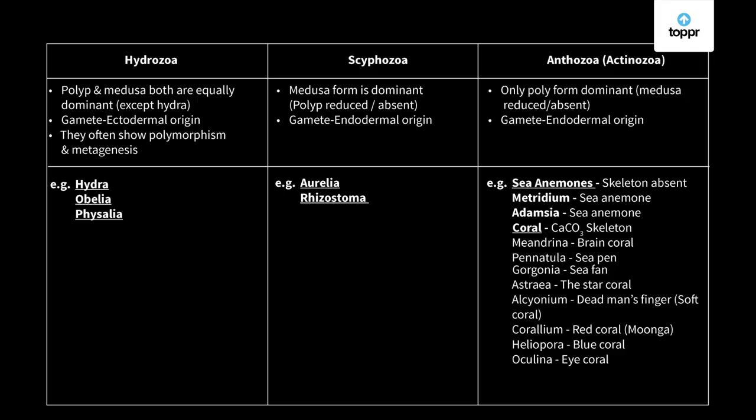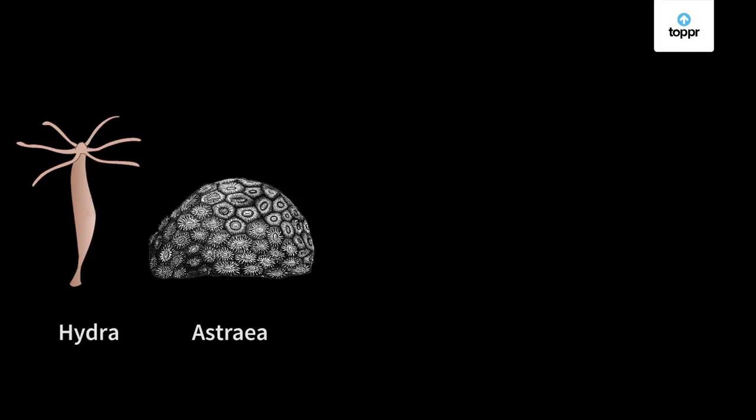Moving forward, let's have a look at some common examples of coelenterata and their figures. Here we see the structure of hydra, then asteria, aurelia, pennatula, and lastly obelia's colony.